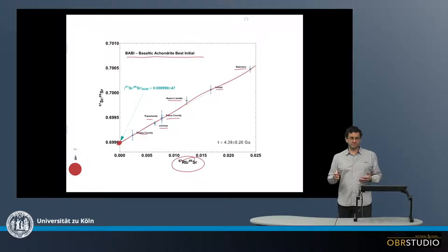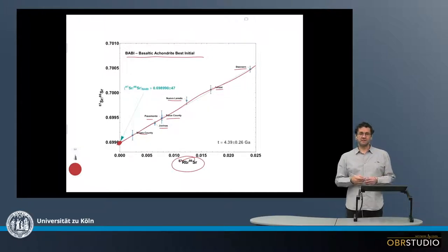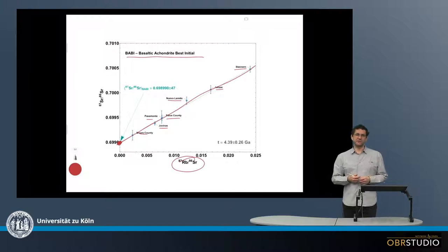And then the assumption behind this is, of course, that these basaltic achondrites initially had the same 87-86-strontium concentration as the CI chondrites, as otherwise, if they were pre-fractionated, this could not be used as the initial.